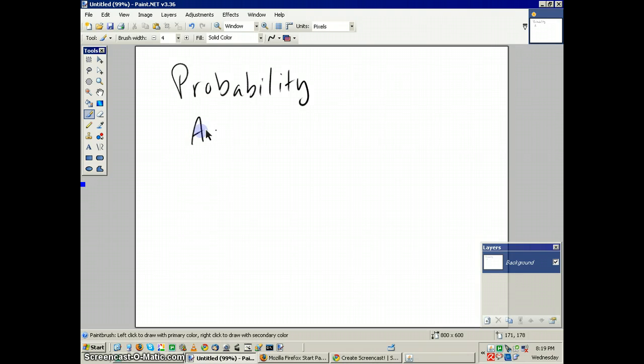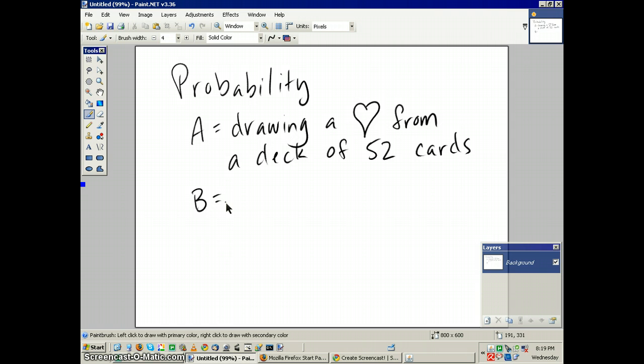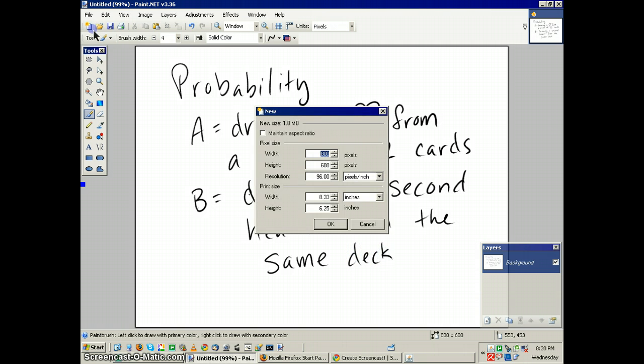What we're going to do is try to find the probability of drawing a heart from a deck of 52 cards. We're also going to see if we can draw a heart from the same deck of cards after we've drawn a heart, or after we've drawn from the first card - see what's the likelihood of drawing a second heart from the same deck. There's our statement of our problem.